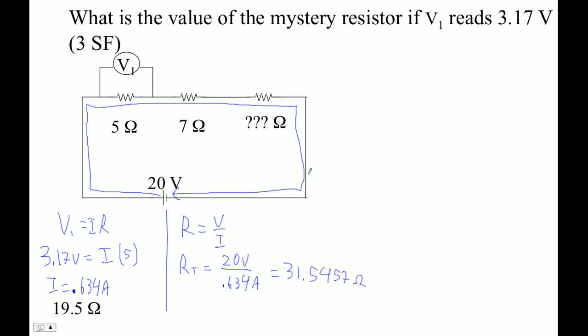And now I think this is easy now, right? So now we've got step 3 is 5 plus 7 plus R equals 31.5457 ohms.